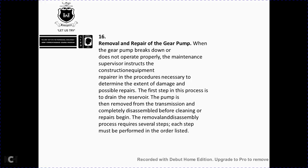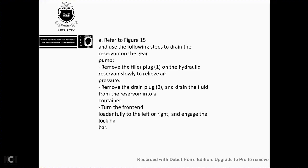Removing and repairing the gear pump. When the gear pump breaks down and does not operate properly, the maintenance supervisor instructs construction equipment repair procedures. The first step is to drain the reservoir and the pump, then remove the drainage. The pump must be completely disassembled before cleaning. Refer to figure 1-5. Use the following steps to drain the reservoir: remove the filler plug from the hydraulic reservoir, slowly relieve the air pressure, remove the drain plug, and drain the fluid from the reservoir into a container.